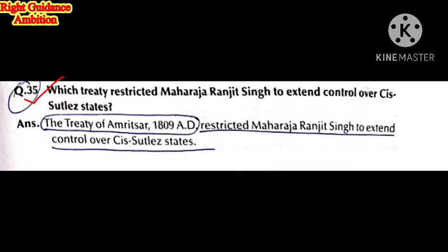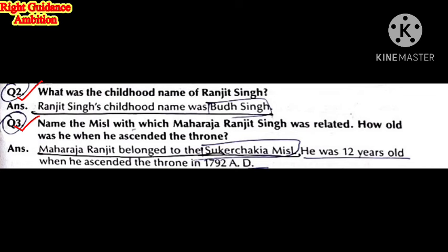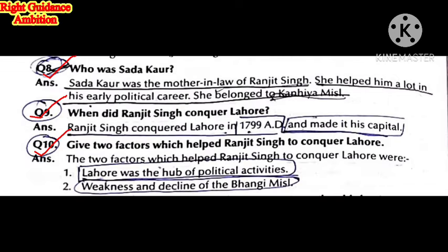Which treaty restricted Maharaj Ranjit Singh from expanding control over Sutlej states? The Treaty of Amritsar 1809, signed with the British, after which the power of Maharaj Ranjit Singh was limited. The next question: what was the childhood name of Maharaj Ranjit Singh? His childhood name was Budh Singh. He ascended the throne at the age of 12, in 1792 AD.